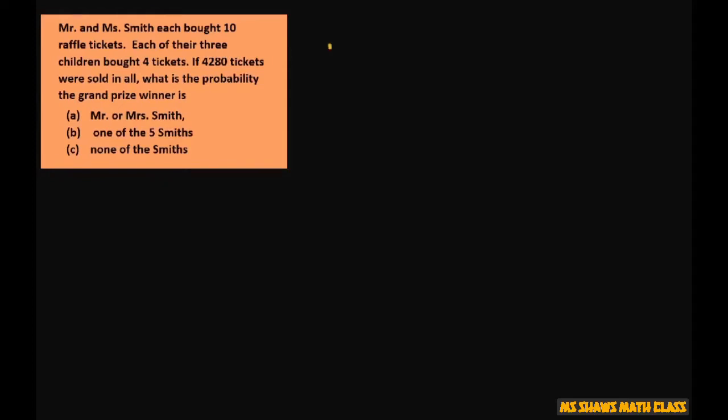So for just Mr. and Mrs. Smith, they each bought 10. So that's 10 plus 10, and the total is 4,280. So that's 20 out of that. That reduces to 1 divided by 214.